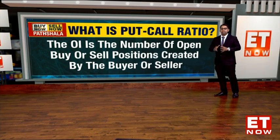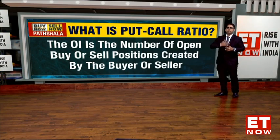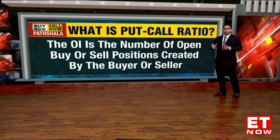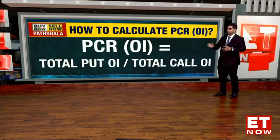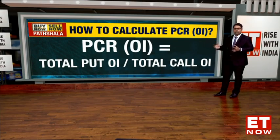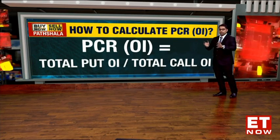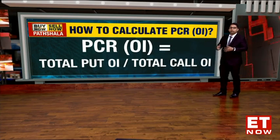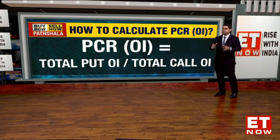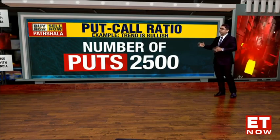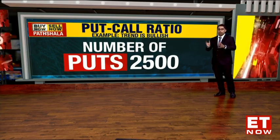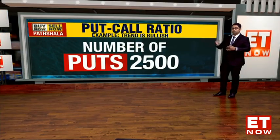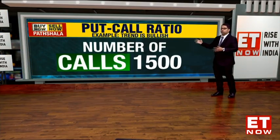Put-call ratios and the options data typically have to be seen from a seller's point of view. Moving to the next slide, which gives us a glimpse of how the put-call ratio is calculated. This is the basic simple formula: PCR-OI — denominated as open interest — is the total open interest on the puts divided by the total open interest on the call front. Let me give a very simple example. Let's take a hypothetical example where the OI of puts of a particular asset class is at 2,500, and the number of calls which are open is at 1,500.